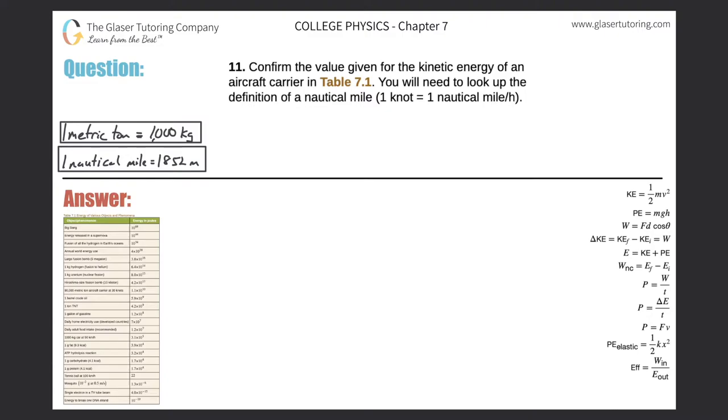Number 11. Confirm the value given for the kinetic energy of an aircraft carrier in table 7.1. You will need to look up the definition of a nautical mile. One knot is equal to one nautical mile per hour. And I looked up the nautical mile, and one nautical mile is 1,852 meters.